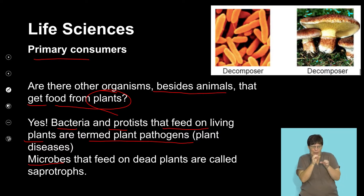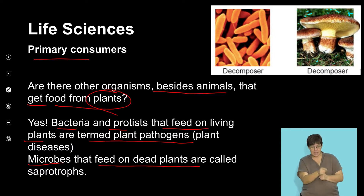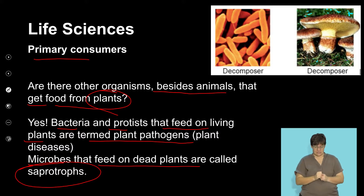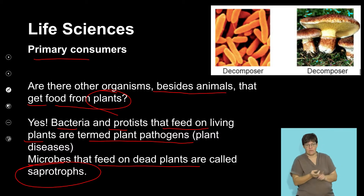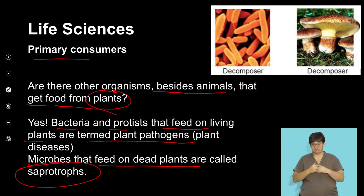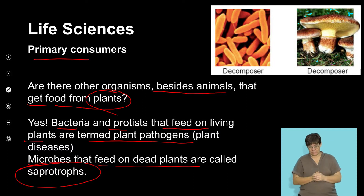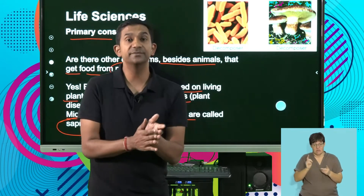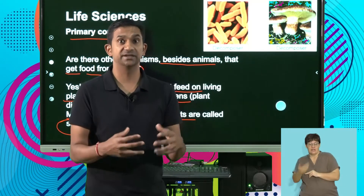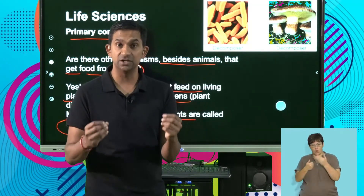Microorganisms feed on dead plants. These are called saprotrophs — they feed on dead plant and animal material. The term saprotrophs refers to organisms that feed on dead organic matter. These could include the remains of plant material or animal material that's undergoing a process of decomposition.